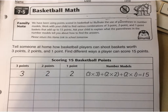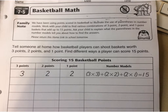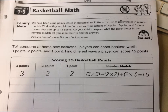Let's take a quick look at Homelink 7.5, called Basketball Math. This is for third grade Everyday Math. It's a way to practice number models, multiplication, and addition. In basketball you can score three points, two points, or one point, and our goal is to score 15 points total. So what are the different ways we can score 15 points?